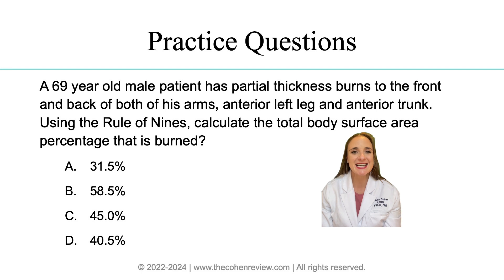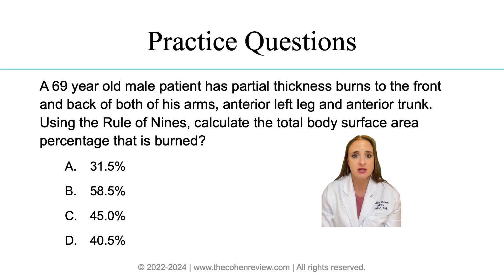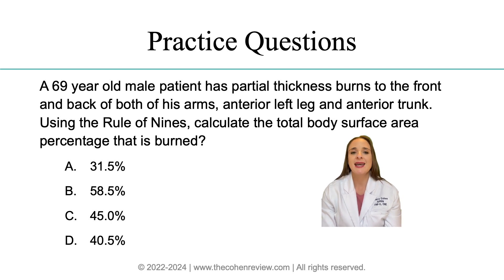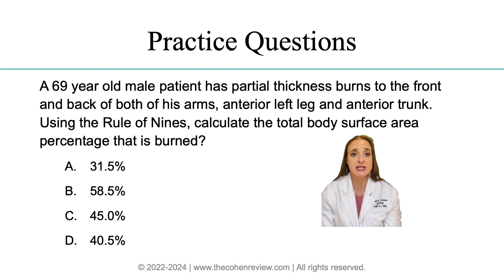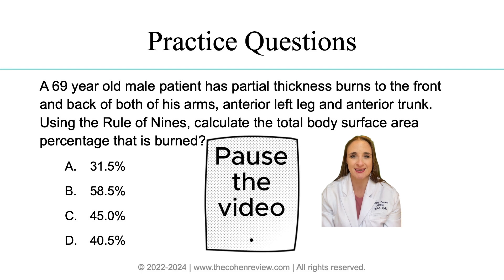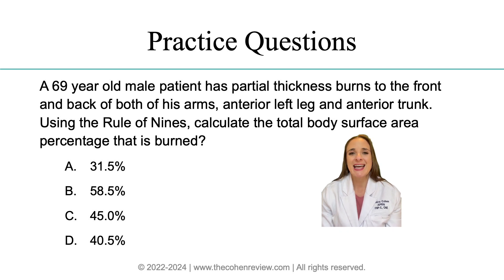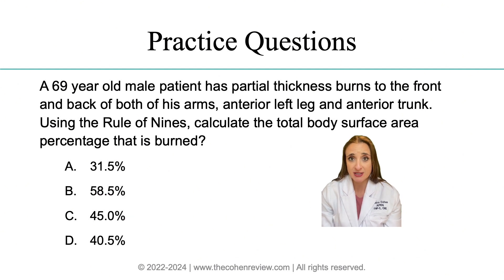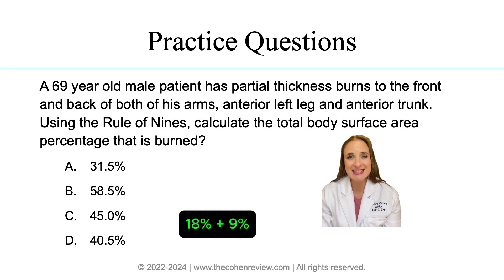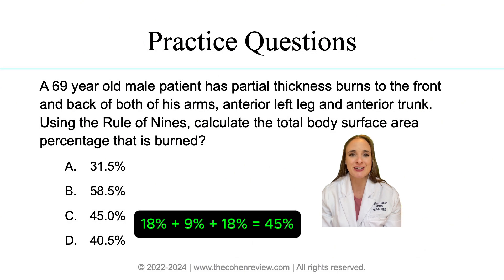Question number two: a 69-year-old male patient has partial thickness or second-degree burns to the front and back of both of his arms, anterior left leg, and anterior trunk. Using the rule of nines, calculate the total body surface area percentage that is burnt. A: 31.5%, B: 58.5%, C: 45%, or D: 40.5%. The correct answer is C, 45%. The front and back of both arms — 9 plus 9 — is 18%. The anterior left leg is 9%, and the anterior trunk is 18%.